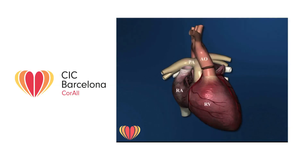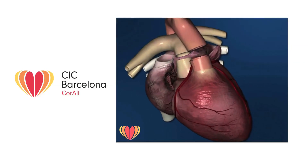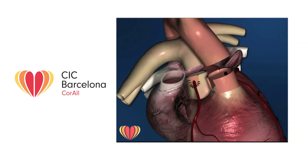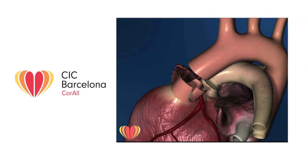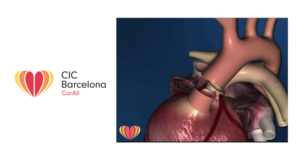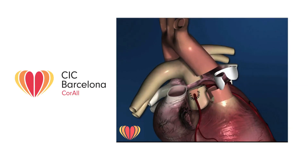The animation shows the arterial switch operation. After the aorta and pulmonary artery have been isolated, surgeons cut the two vessels at one centimeter from the root. The coronary arteries are then detached from the aorta along with a button of aortic tissue. The coronary arteries are re-implanted into the pulmonary artery. The pulmonary artery now becomes the new aorta and takes its origin from the left ventricle. Since a portion of the aortic root has been excised, it must be reconstructed to form the new pulmonary artery using a patch of pericardium from the patient.